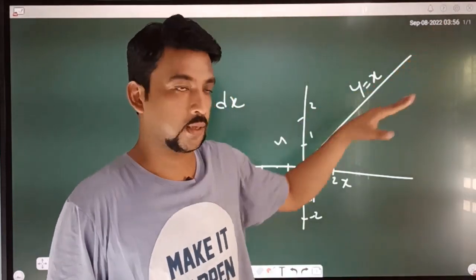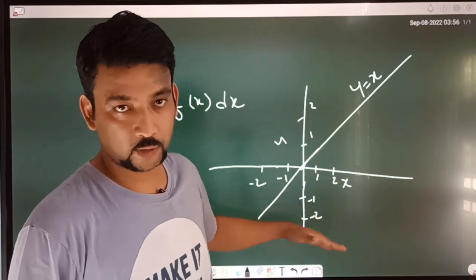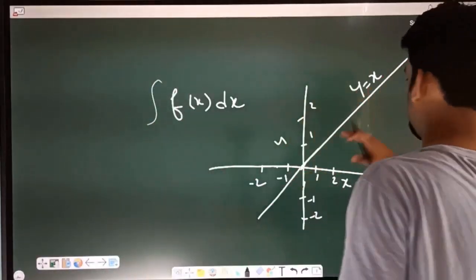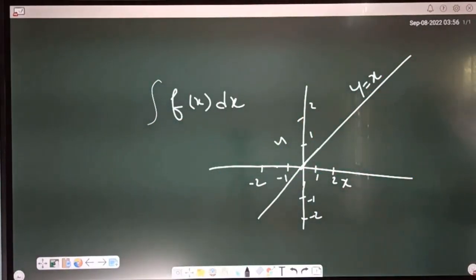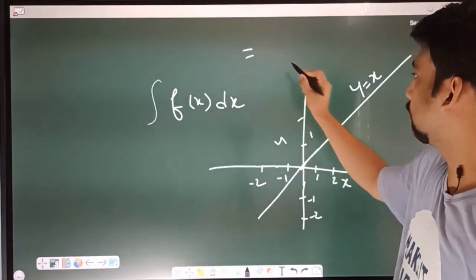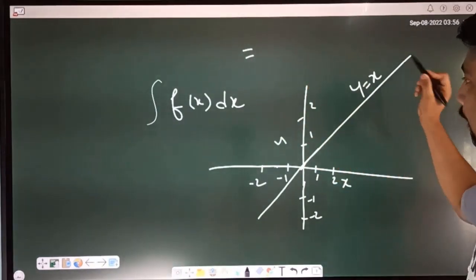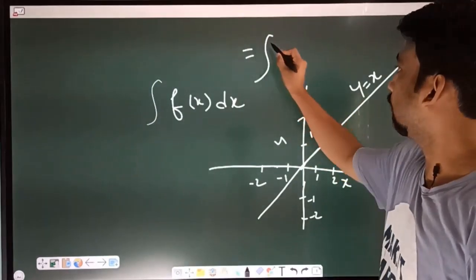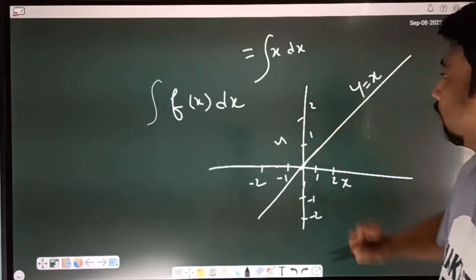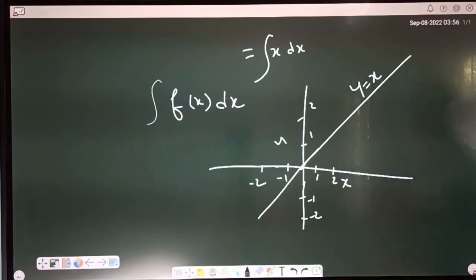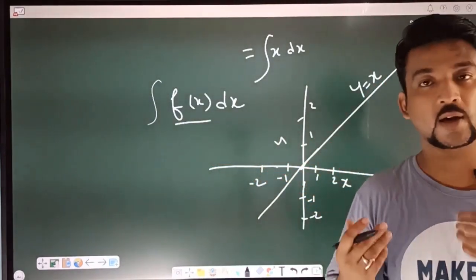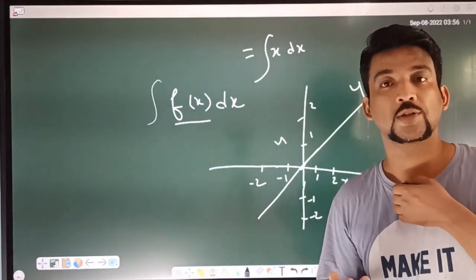If you have a constant x plus c, then you can take minus y equal to x. But it will intersect. So this is f(x)dx. We can write x dx. This is the function — this graph represents the graph, and this graph shows our area.